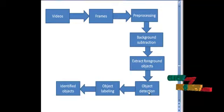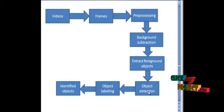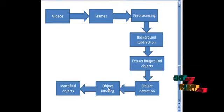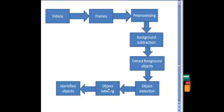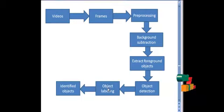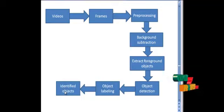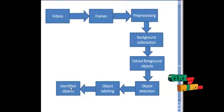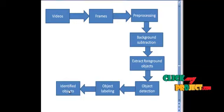The extracted foreground objects are detected by taking only the white pixels, which are the result of the foreground objects. The objects are labeled by measuring their parameters — including the blob area, centroid position, and bounding box. Based on the obtained object labels, the objects are identified by plotting a rectangle box around them using the calculated area, bounding box, and centroid positions of the blobs.